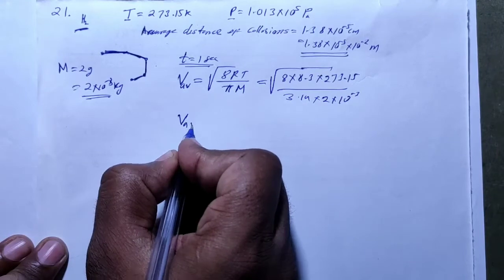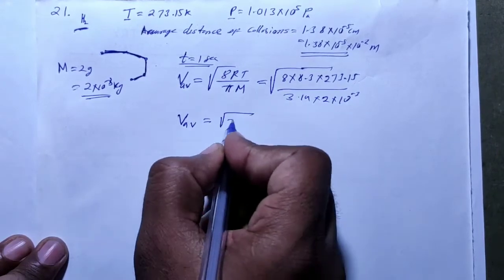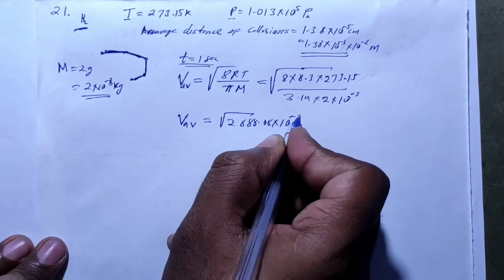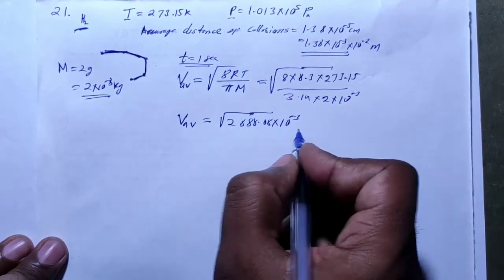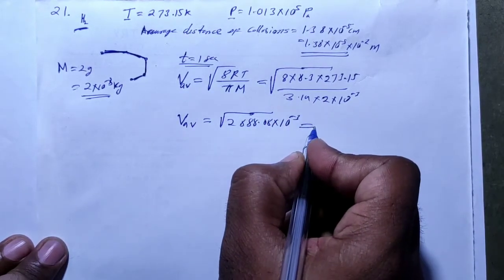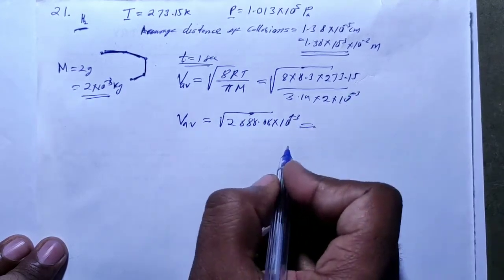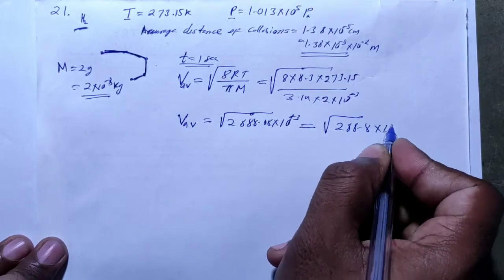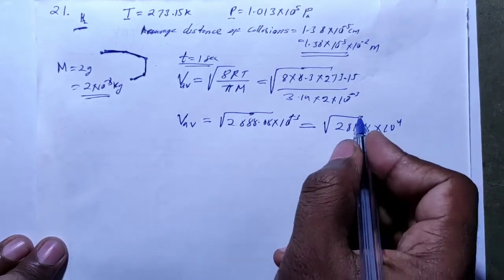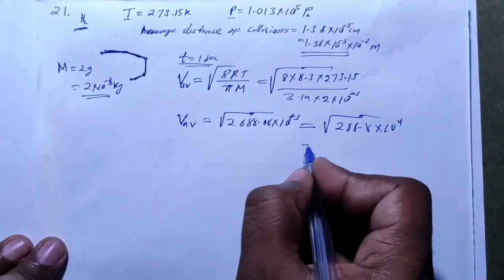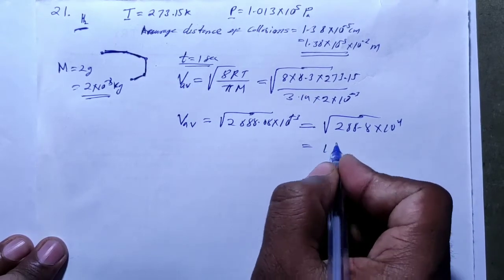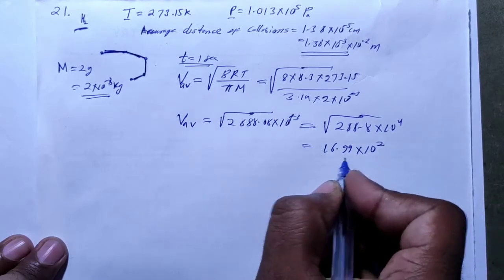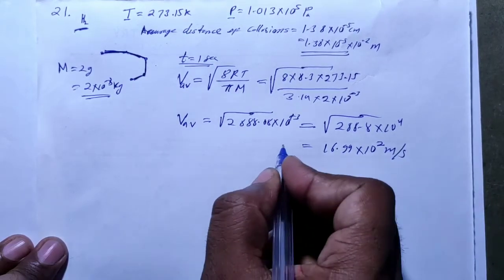Solving this, the average speed comes out. The value under the root is 288.8 × 10⁴, so taking the square root gives 10⁻² correction, and √288 ≈ 16.99. So the average speed is approximately 16.99 × 10² m/s.